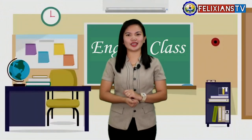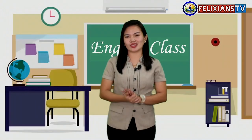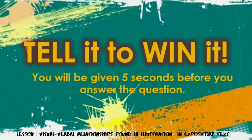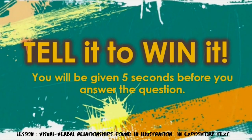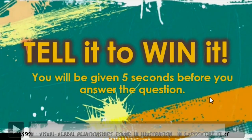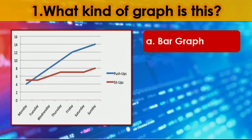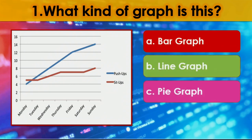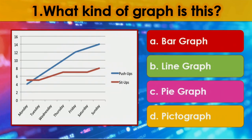On the last part of today's lesson, let's see if you really learned and discovered new things. This is called Tell It to Win It. You will be given 5 seconds before you answer. Number 1 — what kind of graph is this? A. Bar graph. B. Line graph. C. Pie graph. D. Pictograph. The correct answer is letter B — line graph, a non-linear text. Number 2 — what kind of text is presented in this picture? The correct answer is letter B — non-linear text.